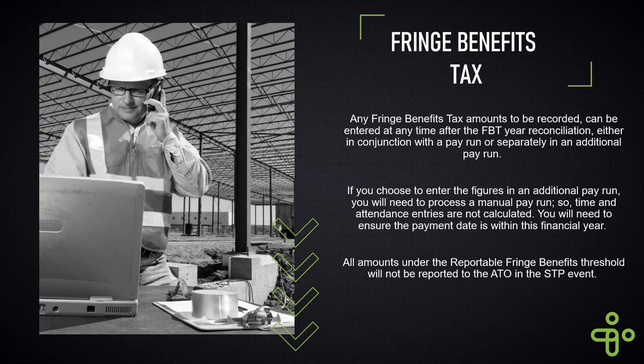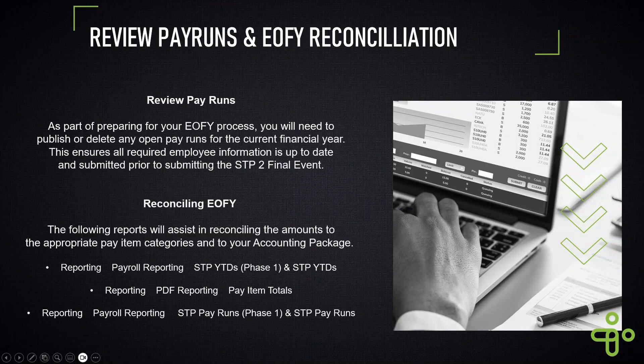Any fringe benefit tax that needs to be recorded can be done through a manual pay run, or in conjunction with your last pay run of the year. That can be entered any time after the fringe benefit tax year finishes, which is the 31st of March each year. If you choose to do it as a manual pay run, that is very straightforward - if you need any help, just pop a ticket in to help and one of us will jump online.